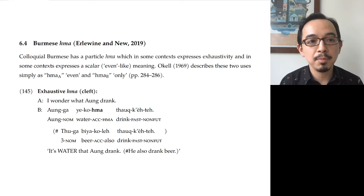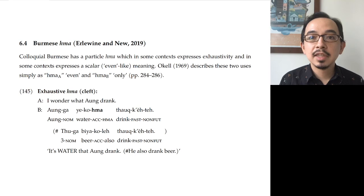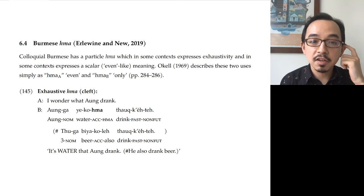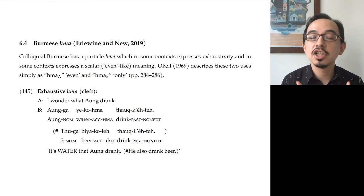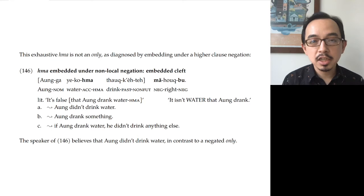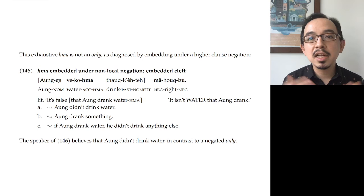Let's look at actual data. There is indeed an exhaustive use of ma. In example 145, someone says 'I wonder what Aung drank,' and you say 'Aung water ma drank' — that's fine, and it has an exhaustive meaning: 'It's water that Aung drank.' We give these English cleft translations, and you'll see why. Crucially, we can diagnose this as exhaustive because you can't continue with 'he also drank beer' — that's judged as infelicitous. We can diagnose this exhaustive use of ma as having cleft-like rather than only-like behavior, based on its behavior under certain embeddings such as negation.